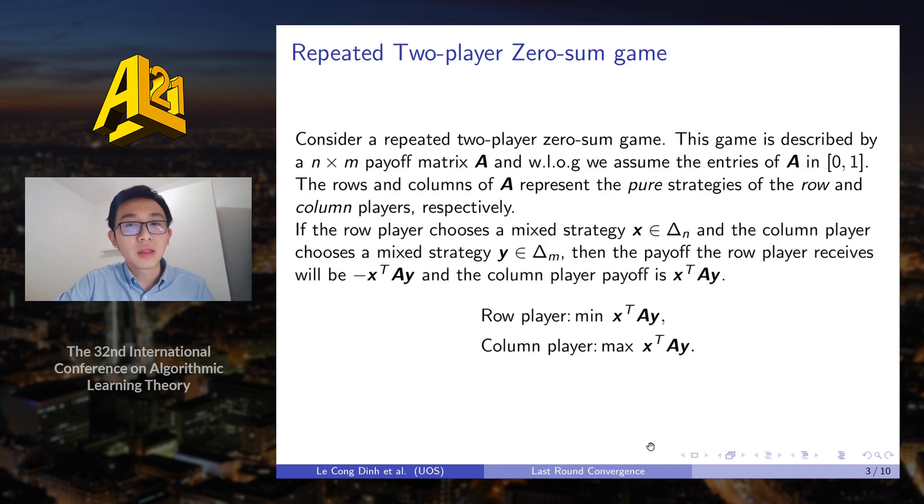The rows and columns of matrix A represent the pure strategies of the row and column players respectively. If the row player chooses mixed strategy x and the column player chooses mixed strategy y, then the payoff the row player receives will be minus x^T Ay when the column player receives x^T Ay. Thus the row player wants to minimize the quantity x^T Ay when the column player wants to maximize the quantity.